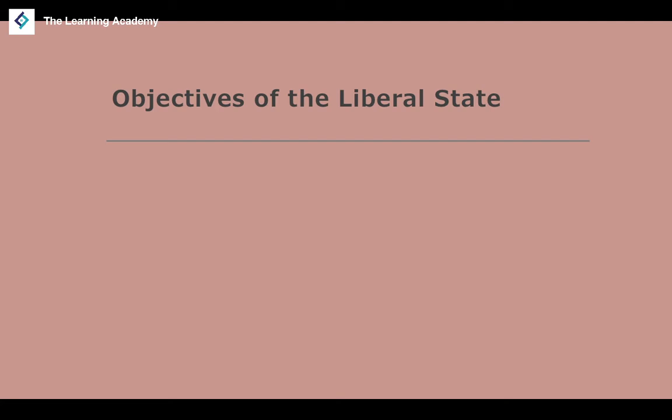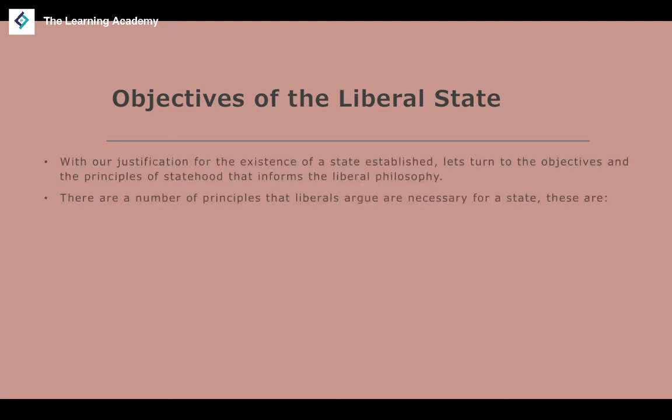Let's look more specifically at the principles of the liberal state. Liberals argue that a number of conditions are necessary for a state to exist. Not only do liberals accept that the state of nature might not necessarily be a bad thing, they also believe that if the state is going to exist it must reject the traditional state, be governed by consent, promote natural rights, promote tolerance, be a meritocracy, promote equality of opportunity, and promote justice.